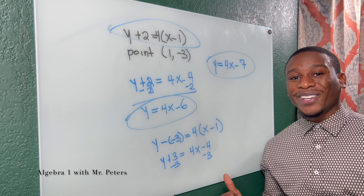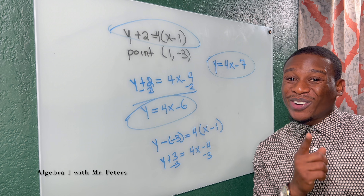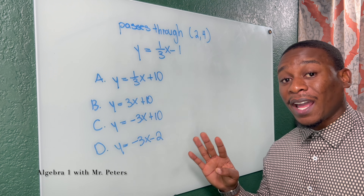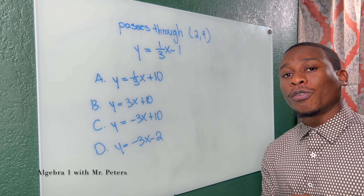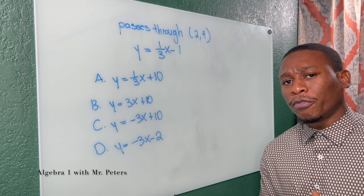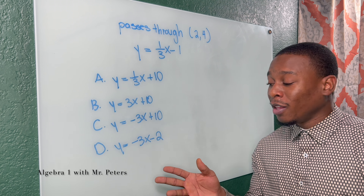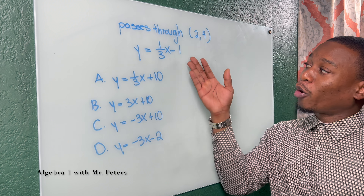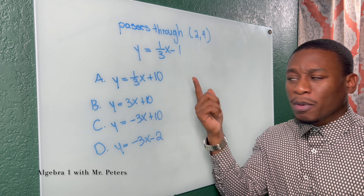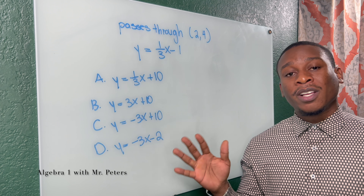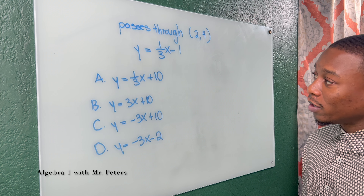Now we're going to go over to the last part of this video where we talk about perpendicular lines and creating equations for them. Part four — really hope you've enjoyed it so far. The task is to find the equation of the perpendicular line that passes through (2, 4) and is perpendicular to the given equation. The number one rule is understanding negative reciprocals.